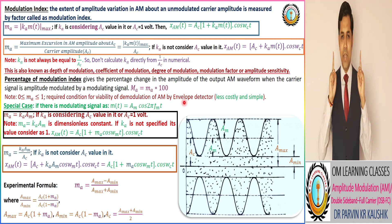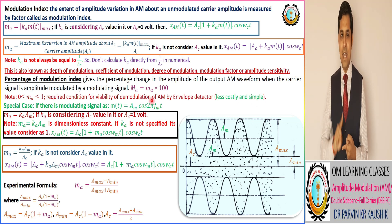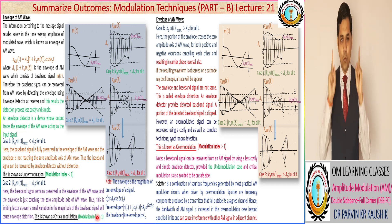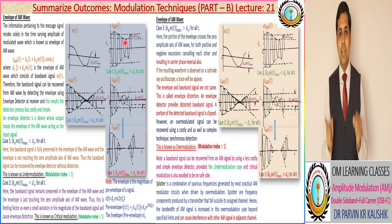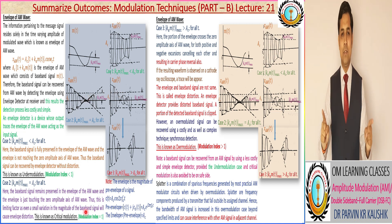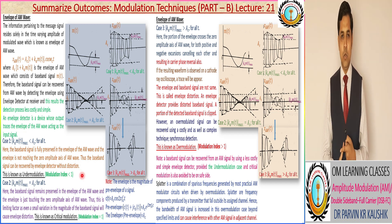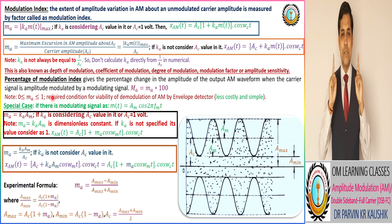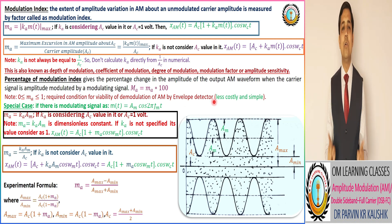As per the envelope of the AM wave, if the modulation index is greater than 0 and less than 1, it is the case of under modulation. If the modulation index is greater than 1, it is the case of over modulation. For an envelope detector or cost-effective simple receiver, the modulation index should be greater than 0 and less than or equal to 1.